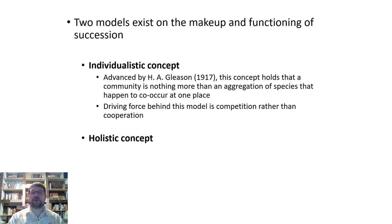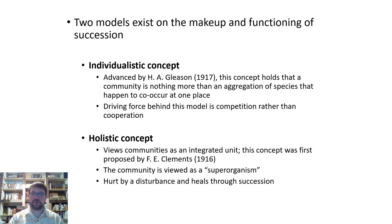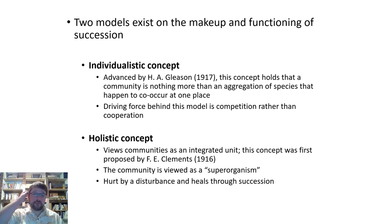In the individualistic concept, by removing Douglas fir and replacing it with ponderosa pine — which might grow faster but not get as large — competition for light might decrease. Gleason is not saying there's no competition or that one species doesn't influence others, but he is saying there's no cooperation in that system. The other model is the holistic concept, put forth by Clements at roughly the same time.